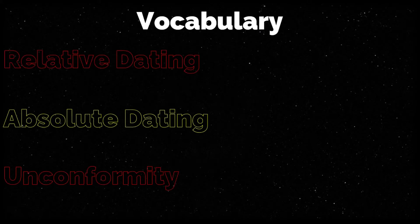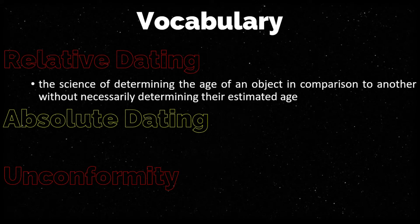First, let's describe some vocabulary words. We have relative dating, absolute dating, and unconformity. When we say relative dating, it is the science of determining the age of an object in comparison to another, without necessarily determining their estimated age.